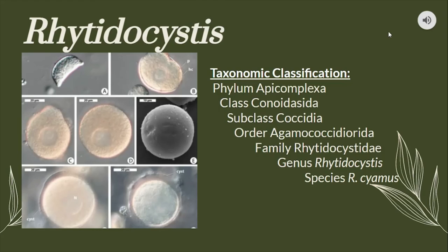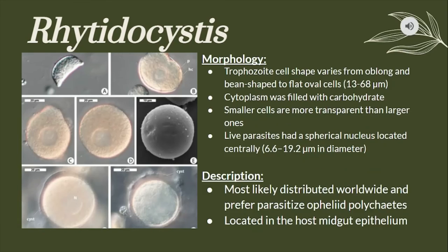Rytidocystis is the only genus within the monotypic family Rytidocystidae. The shape of their trophocytes varies from oblong to flat oval cells. The cytoplasm is filled with granules of carbohydrate storage. The smaller cells are more transparent than larger ones, and the parasites were observed to have a spherical nucleus located centrally. These parasites are mostly found in the midgut epithelium of their hosts, such as polychaetes.